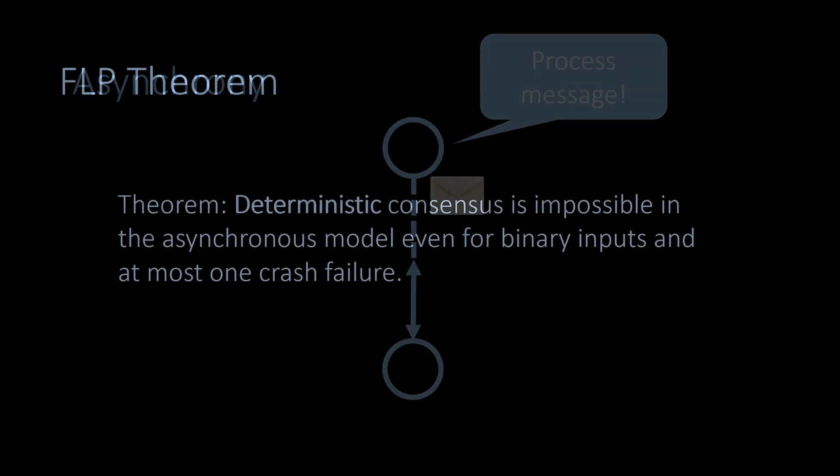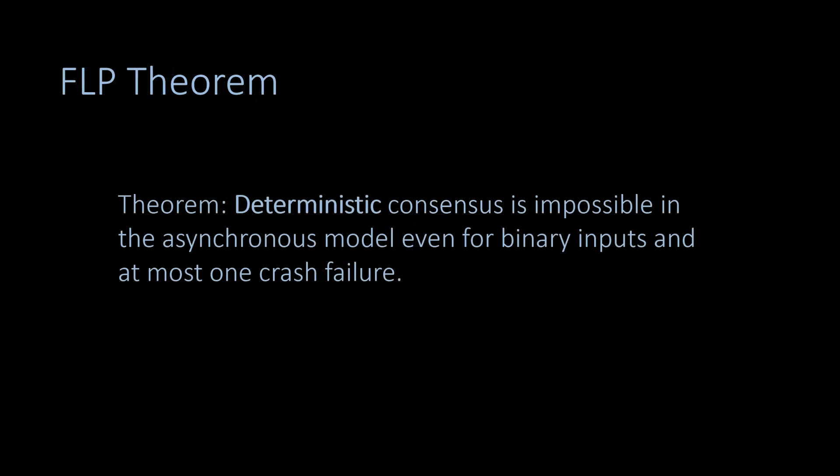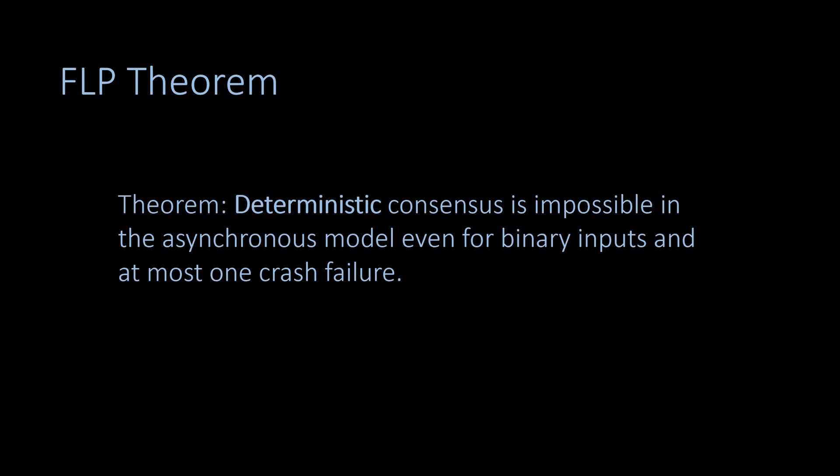Unfortunately it can be shown that the consensus problem cannot be solved at all in this model, even if at most one out of any number of nodes in the distributed system may fail. This is the famous FLP theorem, named after the researchers Fisher, Lynch, and Patterson who proved this result. Fortunately this impossibility result only applies to deterministic algorithms, so there is hope that an algorithm that randomizes its decisions may be able to solve consensus after all.